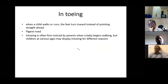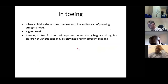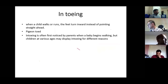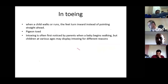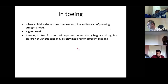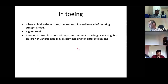The second topic is in-toeing, which is commonly asked and may be presented as an abnormal rotational profile in the lower limb, as in-toeing, or as a child with excessive internal rotation of the hips with a W-sitting sign and a picture. In-toeing describes when a child walks or runs with feet turning inward instead of pointing straight ahead — also called pigeon-toed. It is often first noticed by parents when a baby begins walking, but children at various ages may display in-toeing for different reasons.